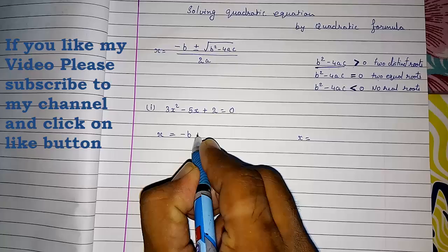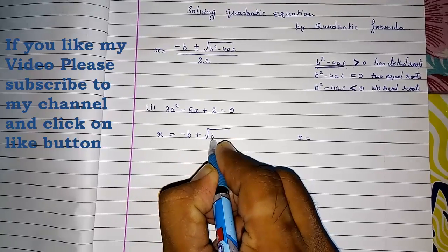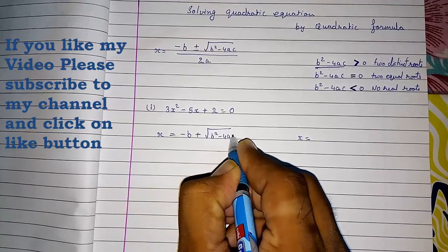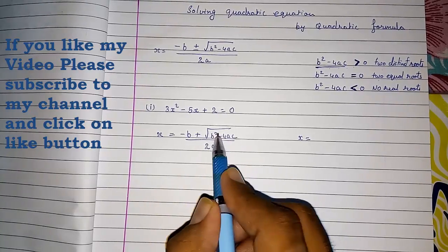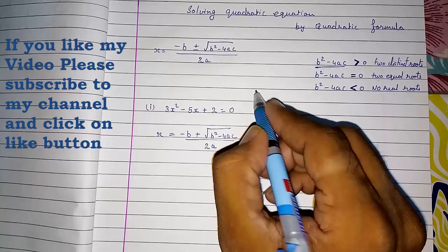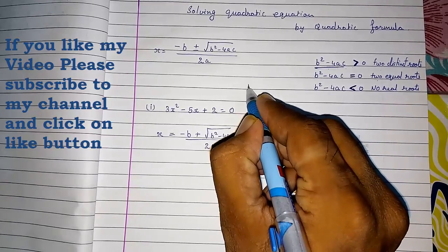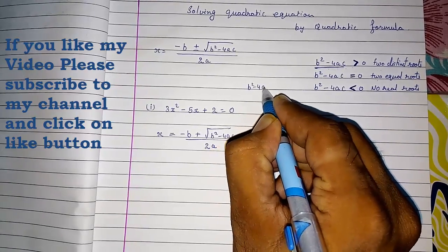x equals minus b plus under root b square minus 4ac by 2a. Sorry, but actually first we have to find b square minus 4ac. So I am finding out here b square minus 4ac.